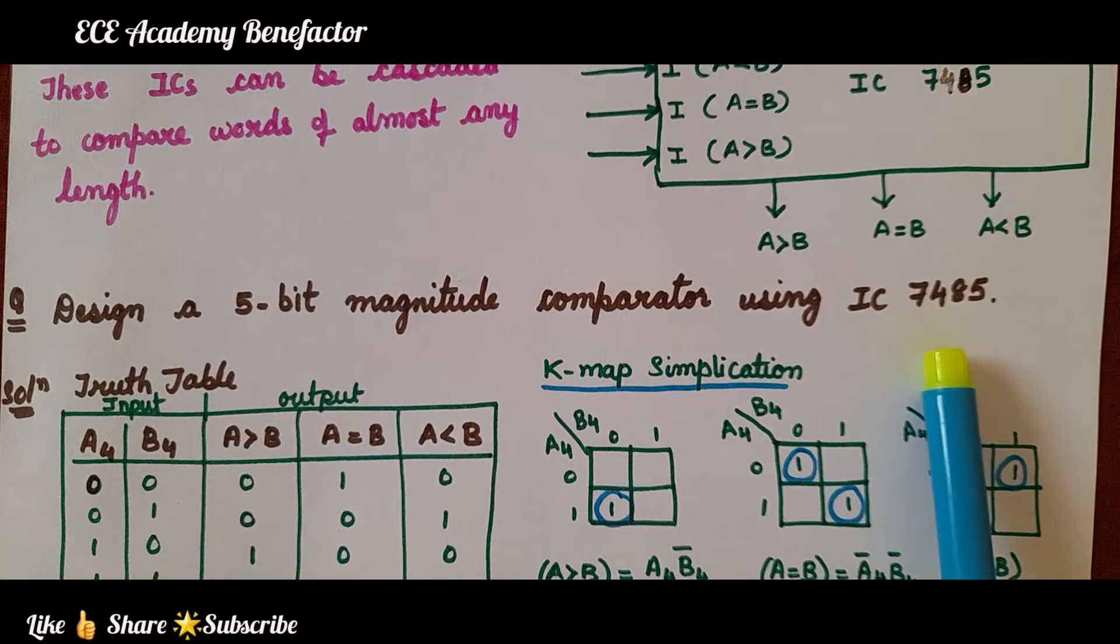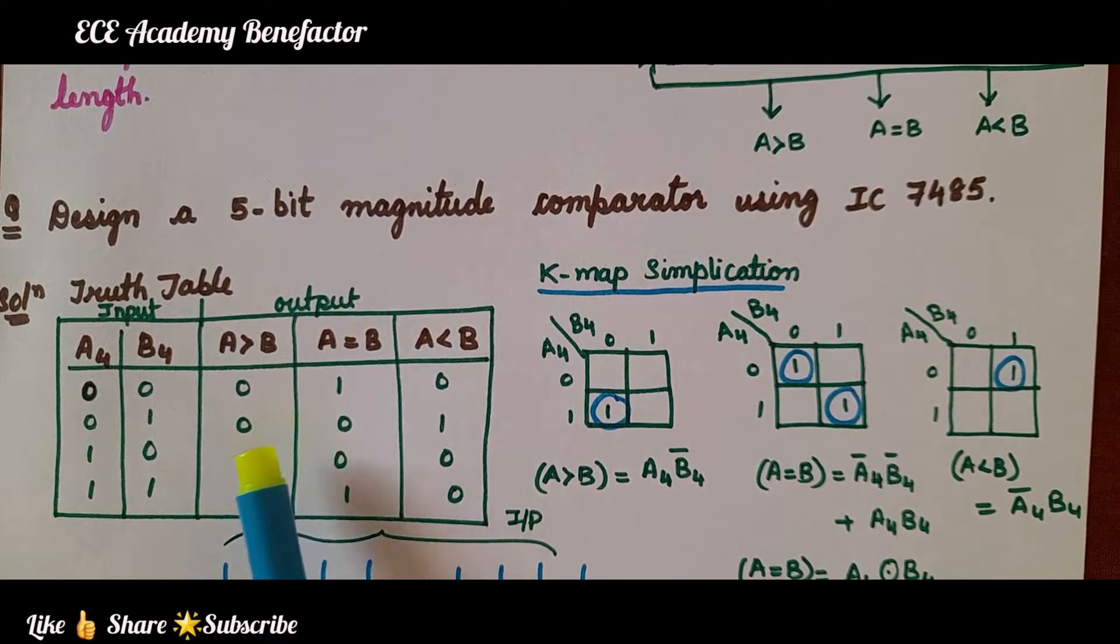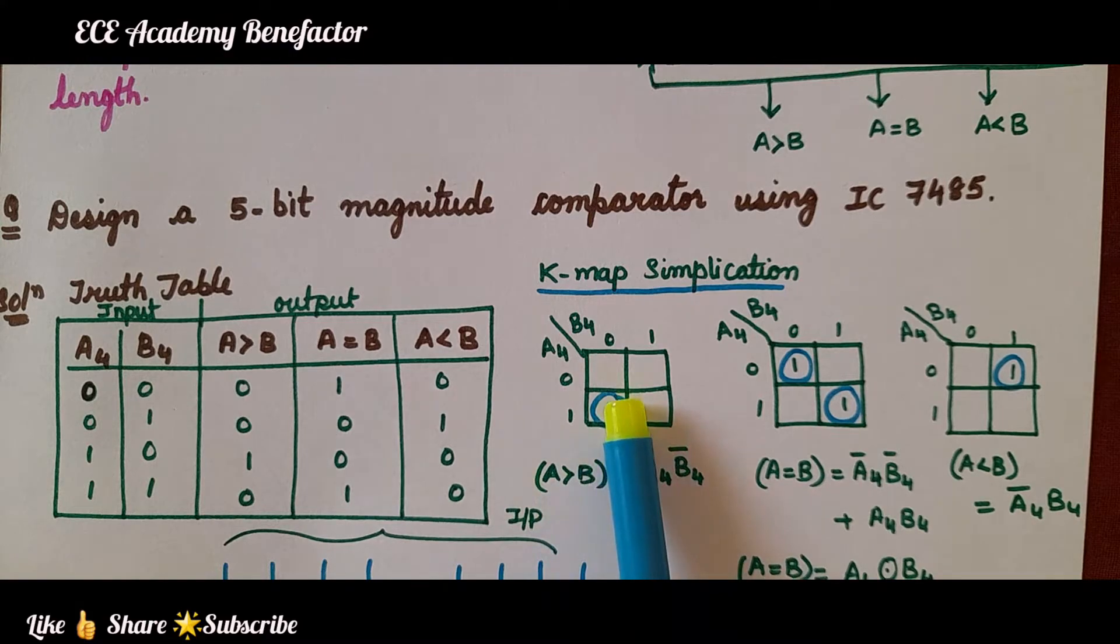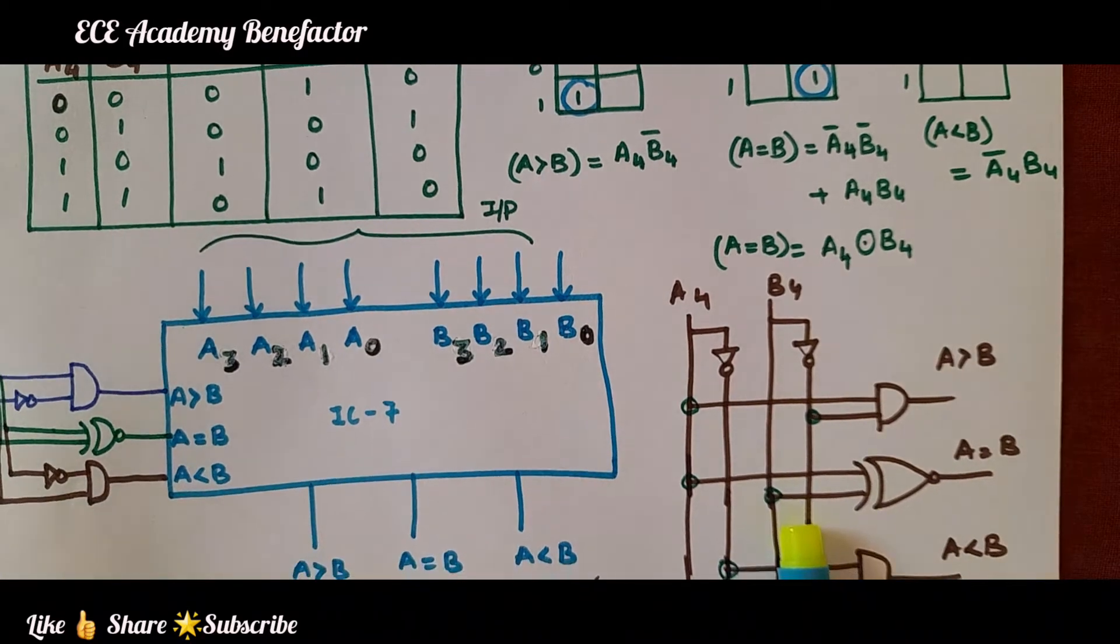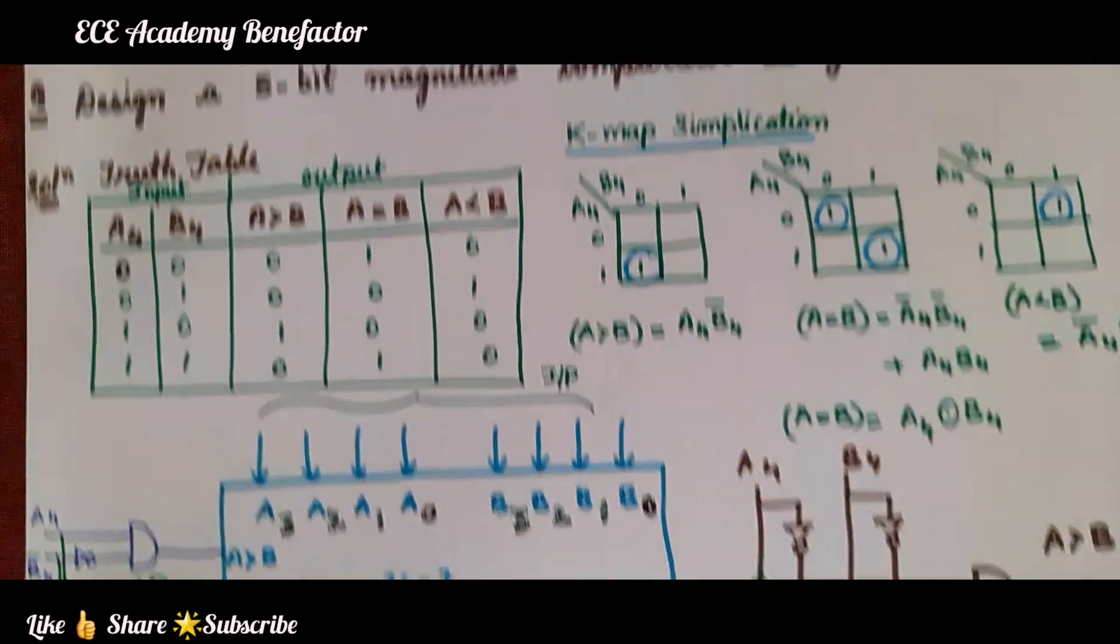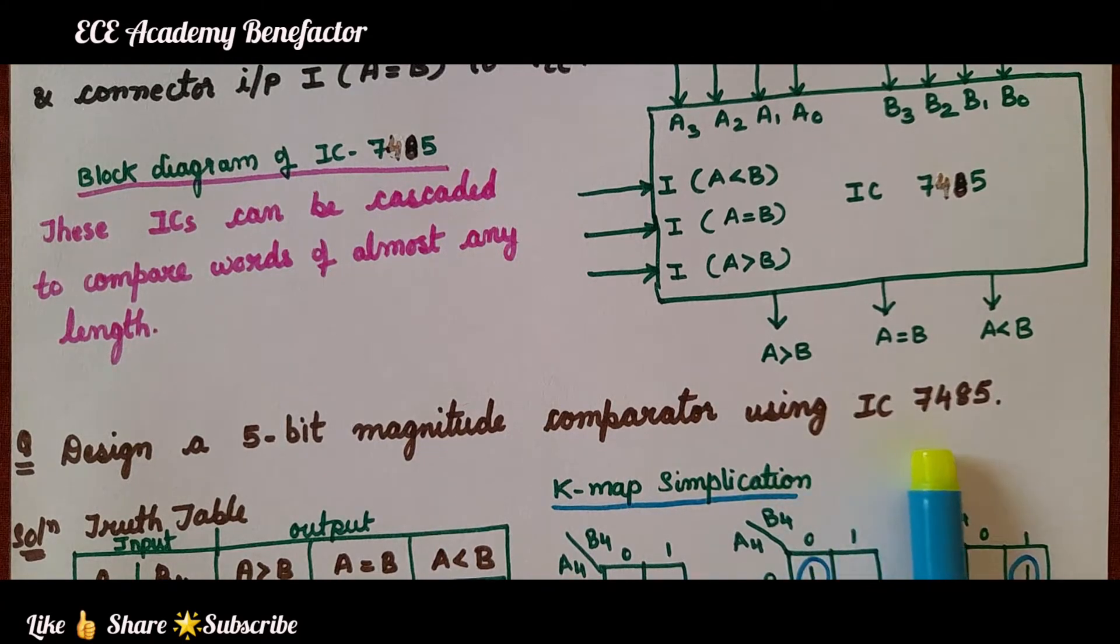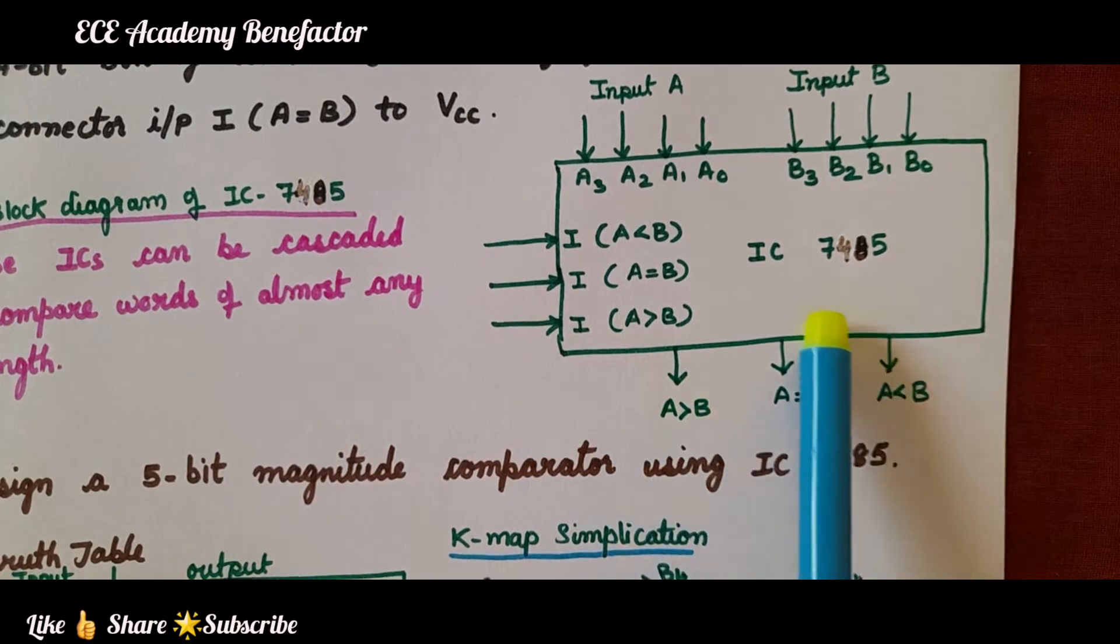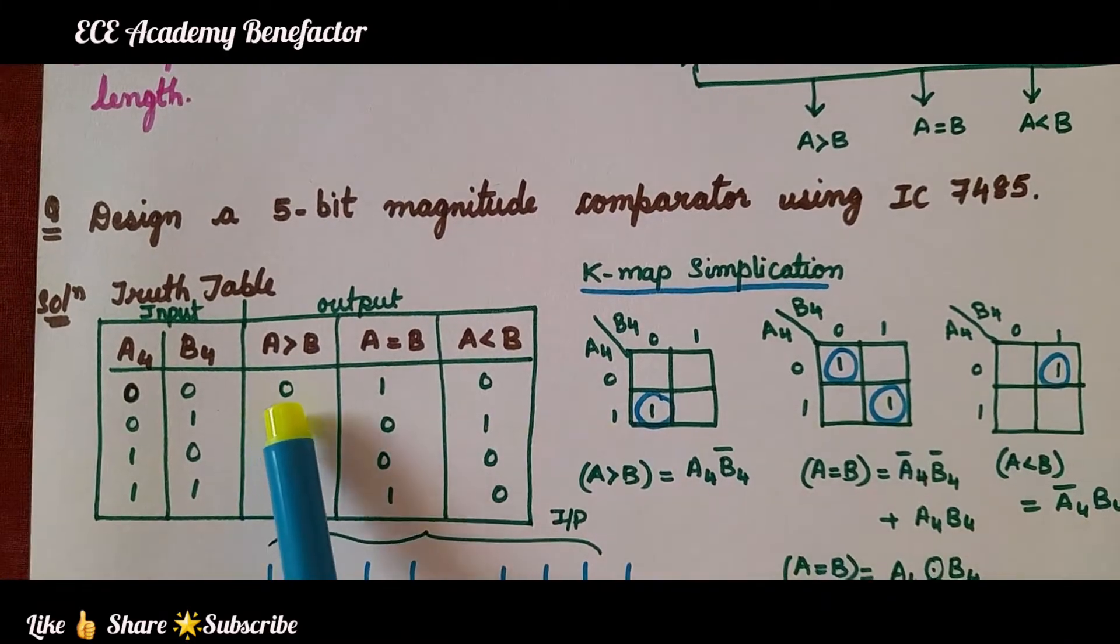Whenever a design question is there, first we need to draw the truth table. After truth table, K-map simplification, and based on the simplification of K-map, we will get the expressions and for those expressions we need to draw the logic diagram using logic gates. What is the question here? Design a 5-bit magnitude comparator using IC7485. You know the structure, the block diagram of IC7485, we can directly use this block diagram.